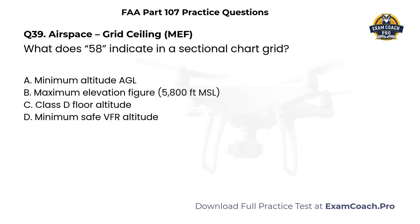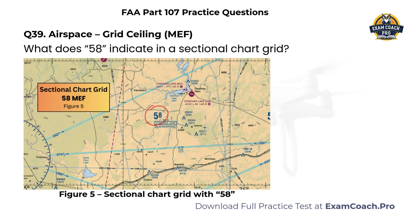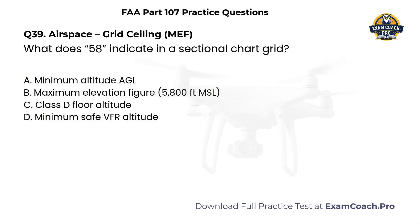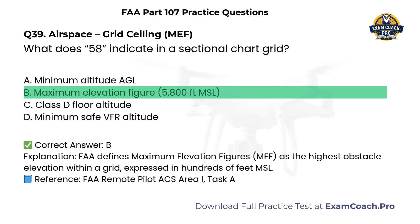Airspace — Grid Ceiling MEF. Refer to Figure 5, sectional chart grid with 5-8. What does 5-8 indicate in a sectional chart grid? A. Minimum altitude AGL. B. Maximum elevation figure, 5,800 feet MSL. C. Class D floor altitude. D. Minimum safe VFR altitude. Correct answer: B. Maximum elevation figure, 5,800 feet MSL. The FAA defines maximum elevation figures as the highest obstacle elevation within a grid, expressed in hundreds of feet MSL.